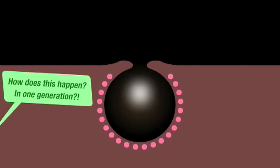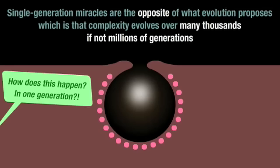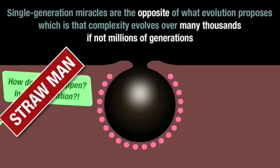One person scoffed, how does this happen in one generation? Single generation miracles are the opposite of what evolution proposes, which is that complexity evolves over many thousands if not millions of generations. So this is another blatant strawman.